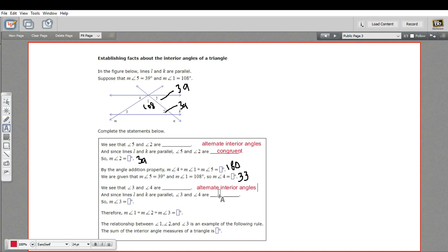And therefore three and four are congruent. So the measure of angle three has to be 33 degrees, congruent to four here. So this is 33.